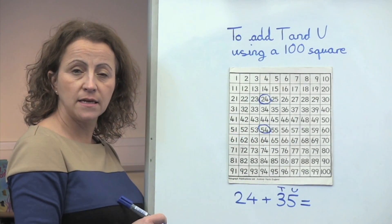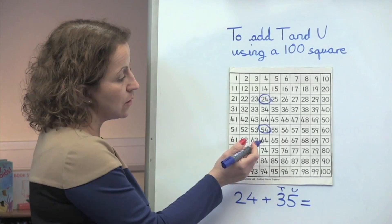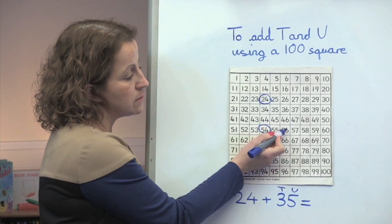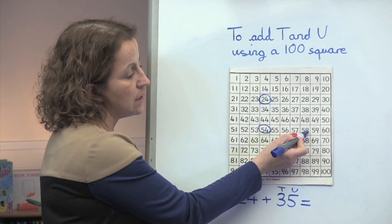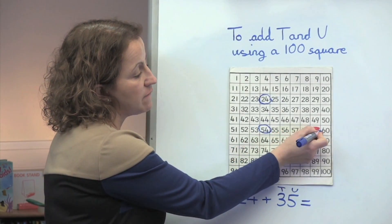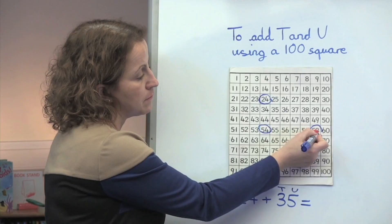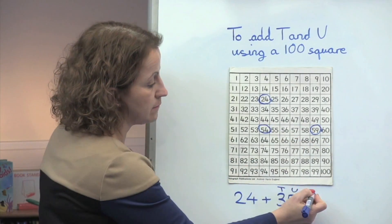Now let's add 5 units. 1, 2, 3, 4, 5. The answer is 59.